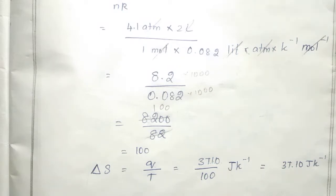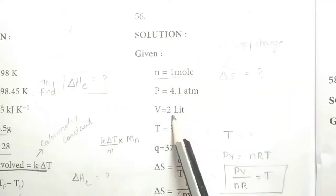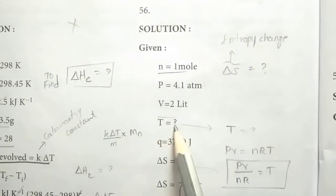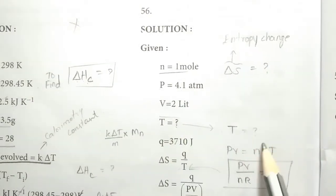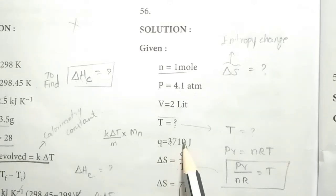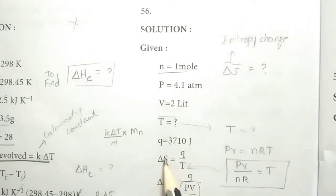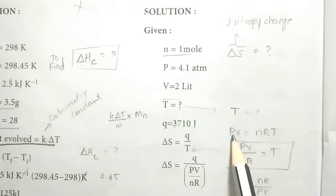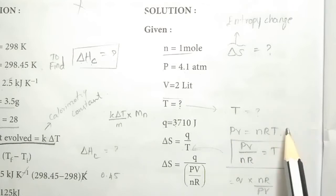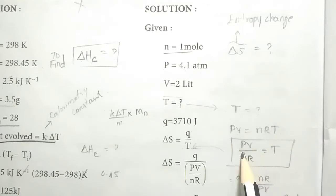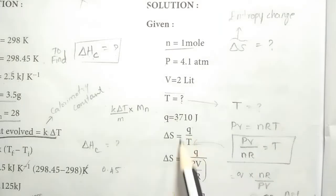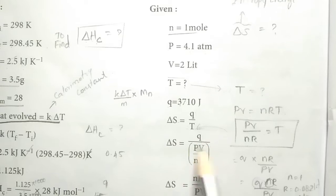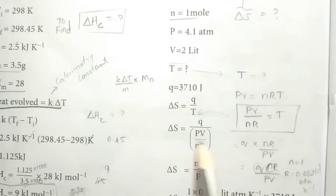To summarize: n = 1 mol, P = 4.1 atm, V = 2 L, Q = 3,710 J, and we need delta S. Delta S equals Q divided by T, and T equals PV divided by nR. We substitute Q divided by T, which becomes Q divided by (PV/nR), and in the denominator we multiply.